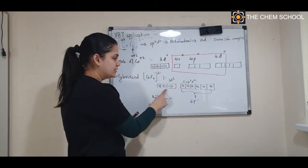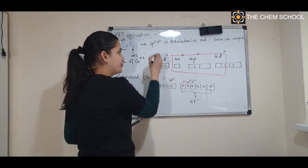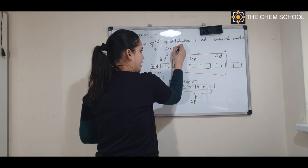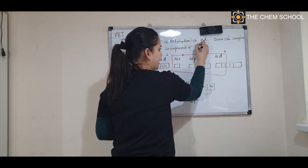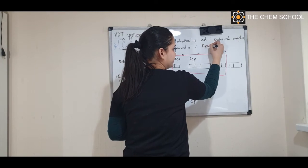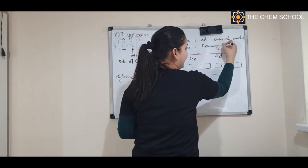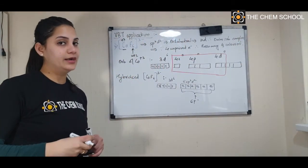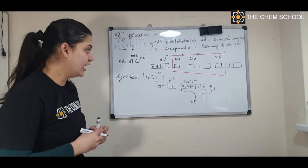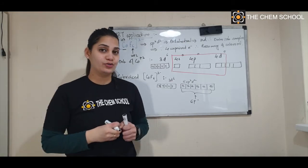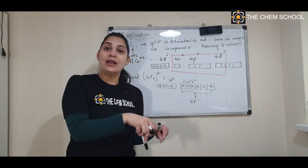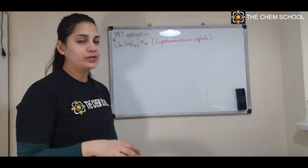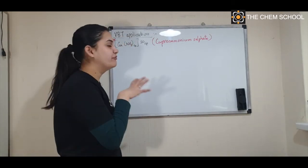There are four unpaired electrons present in the unhybridized 3d⁶. Since four unpaired electrons are present, the complex is paramagnetic and colored. This was a very good example because we got both inner orbital (first example) and outer orbital (second example) octahedral complexes.